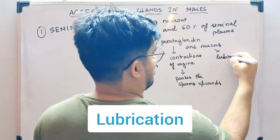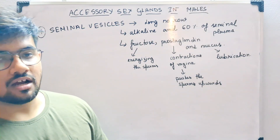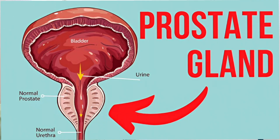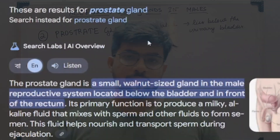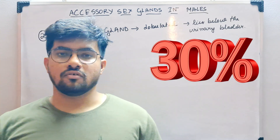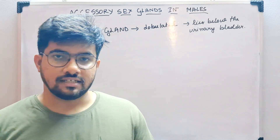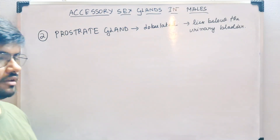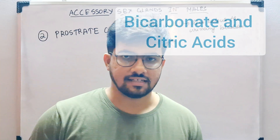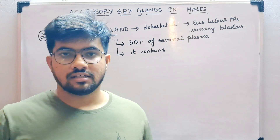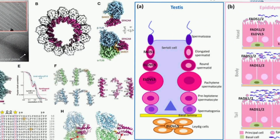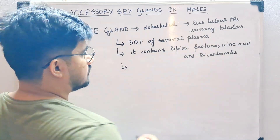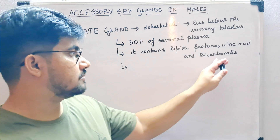The prostate gland is a lobulated gland and it lies below the urinary bladder. The secretions from the prostate gland make up about 30 percent of the overall seminal plasma. The secretions contain some lipids, some proteins, sodium bicarbonate, and citric acid.